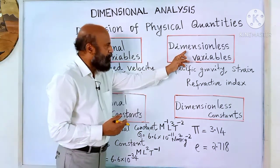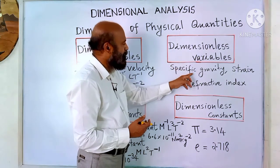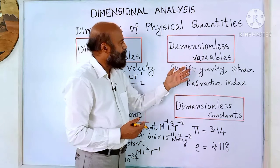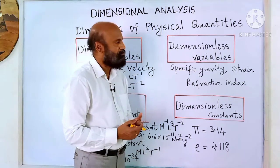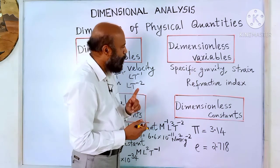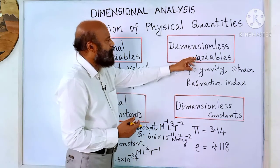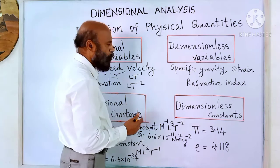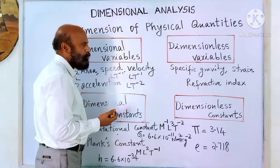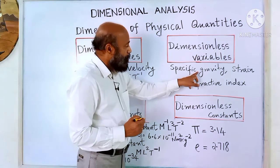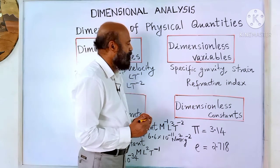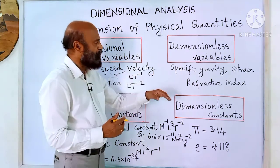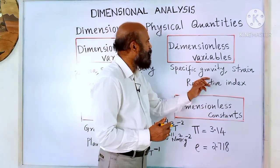Some quantities have no dimension. Examples include specific gravity, refractive index, and strain — these are dimensionless variables. Specific gravity can take any value: for kerosene it is 0.8, for water it is 1. Specific gravity, or relative density, is the ratio of the density of a substance to the density of water, so there is no dimension. Refractive index is the ratio of the velocity of light in air to the velocity of light in a medium — when you take the ratio the dimensions cancel.